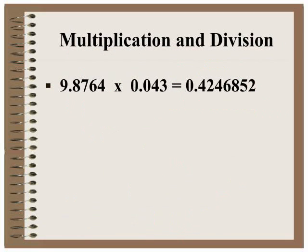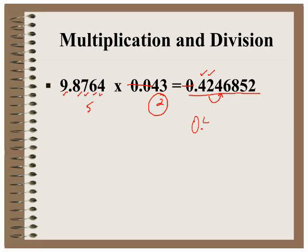Let's look at another example. If we multiply these two numbers — the first contains five significant figures, leading zeros don't count, so the second has two significant figures. We put it into our calculator and this comes out on the display. We need to round to our worst measurement, which contains two significant figures. This zero does not count as one of our significant figures. We identify our two significant figures, then look one number past to see if we need to round. The 4 does not change anything, so 0.42 is the correct rounding showing two significant figures.